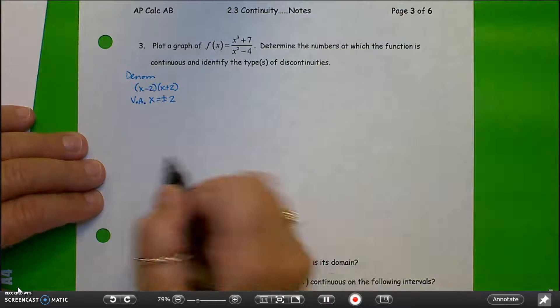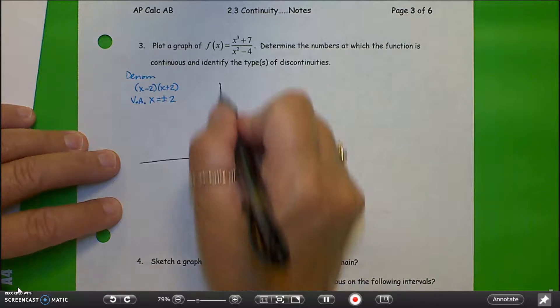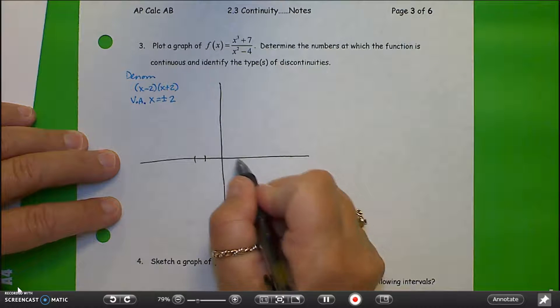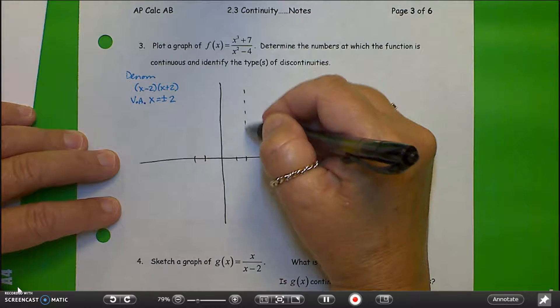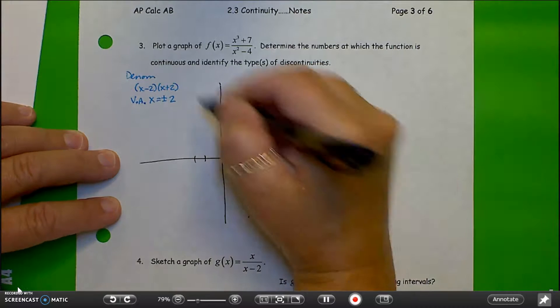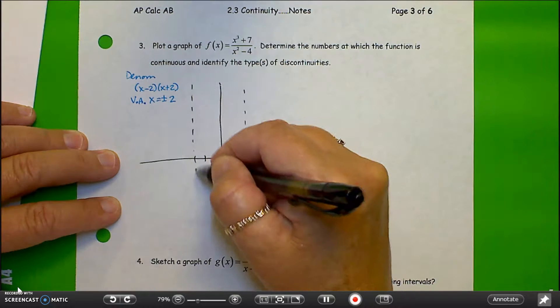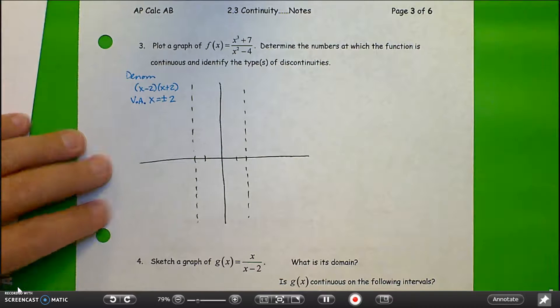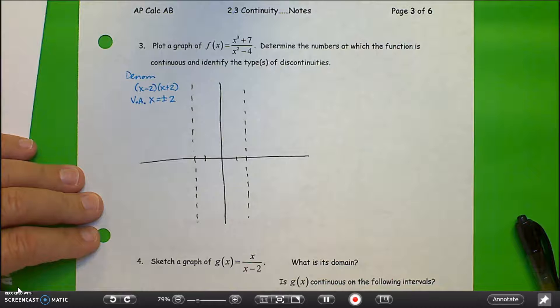I'm going to go ahead and start sketching that out. So there's at positive 2, at negative 2, some vertical asymptotes. Let's see what else we can learn from this graph.